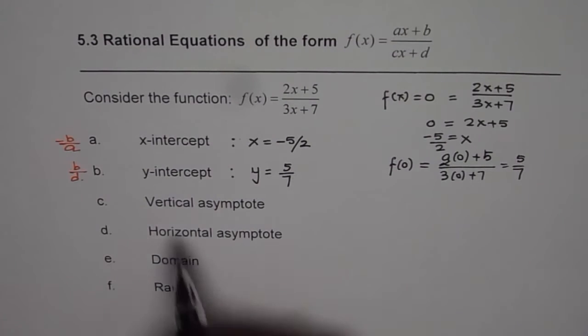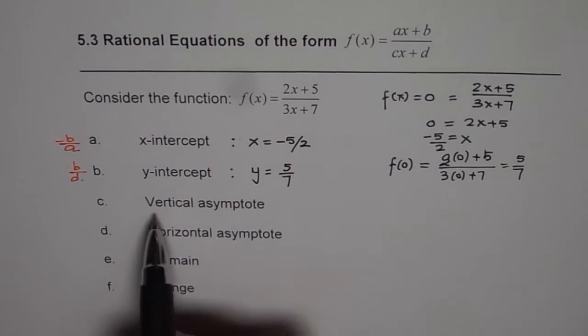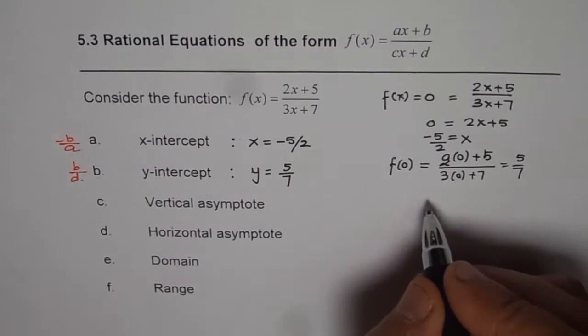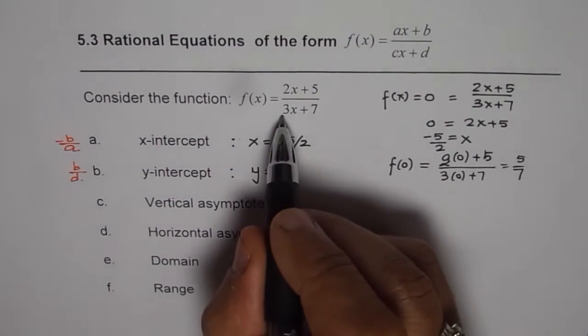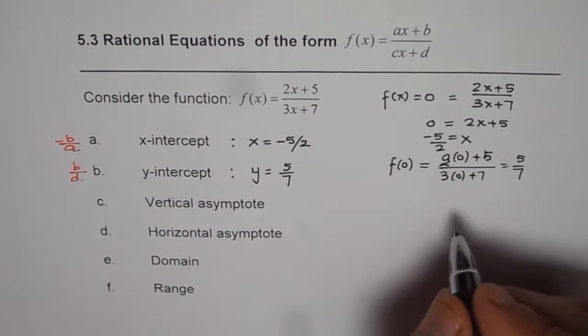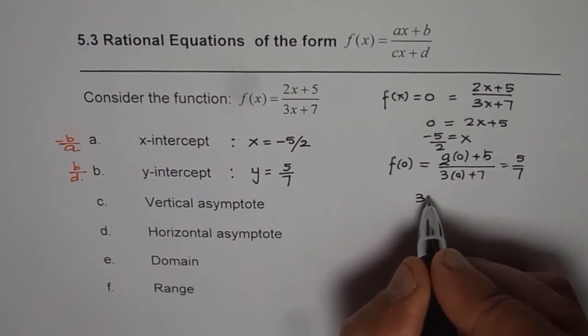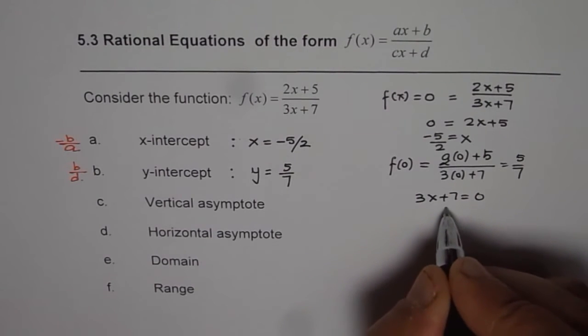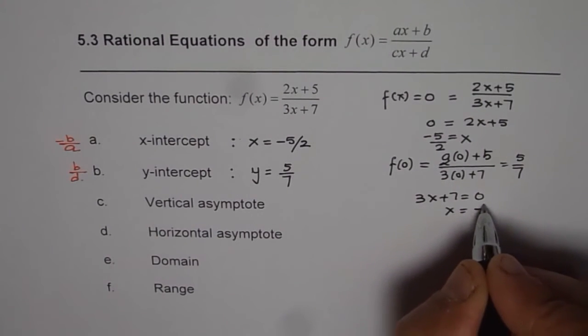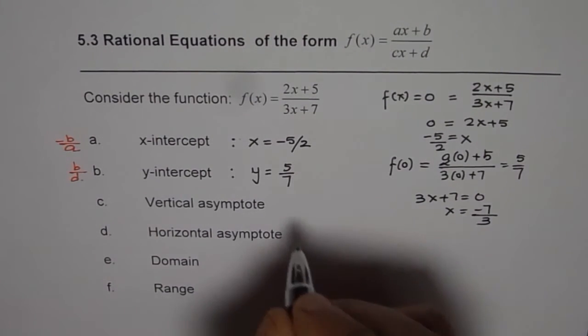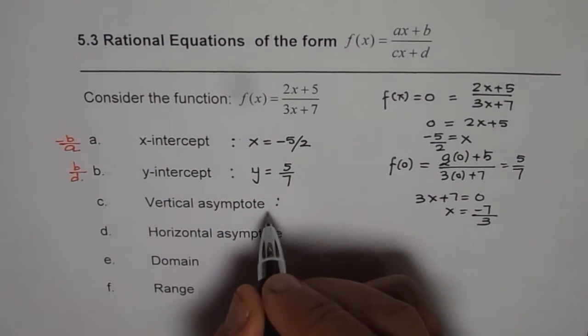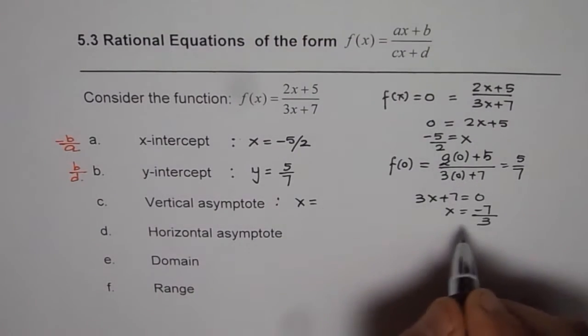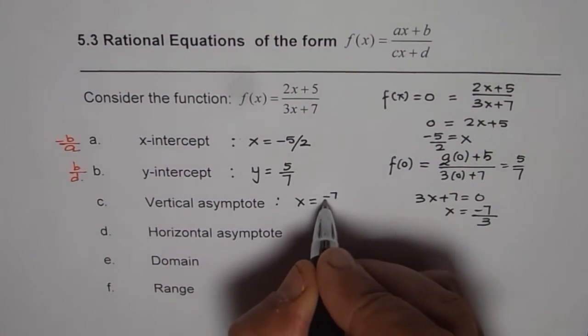Now let us find the vertical asymptotes. Vertical asymptotes will be when the denominator is 0. That is to say that in this given equation, 3x plus 7 equals to 0. So equate denominator to 0. So 3x plus 7 equals to 0. Now solve for x. So x equals to minus 7 divided by 3. So in this case, vertical asymptote is a vertical line, which is x equals to minus 7 over 3.